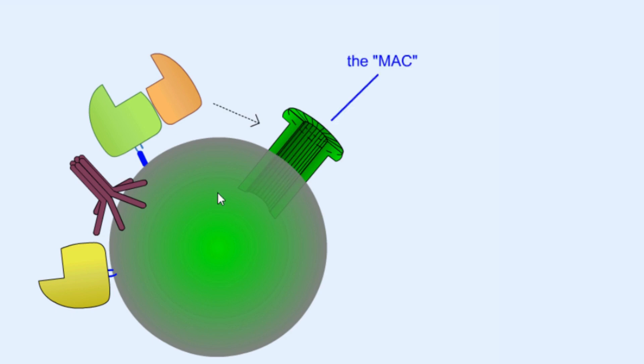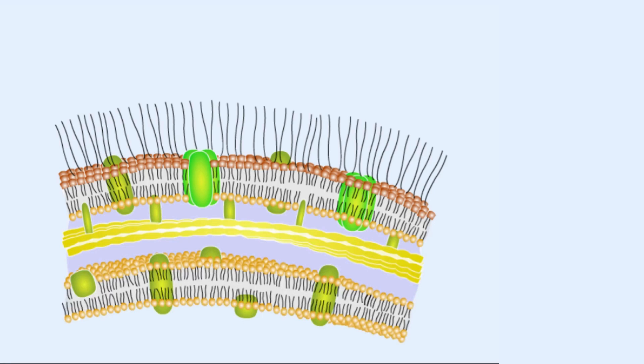Now if we look at here the process of C5 convertase, they start to form what is known as a membrane attack complex or MAC that will ultimately kill the cell by changing the osmotic balance of a cell. Let's look at how it exactly does the whole process. Here it comes.